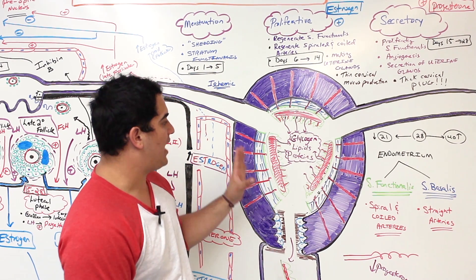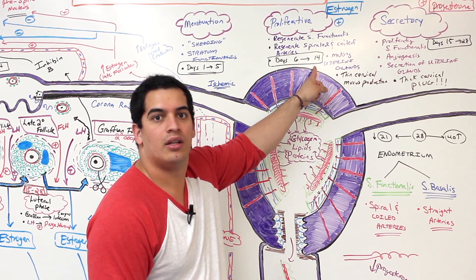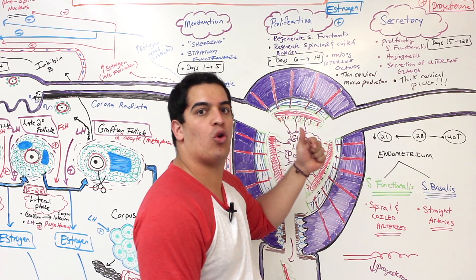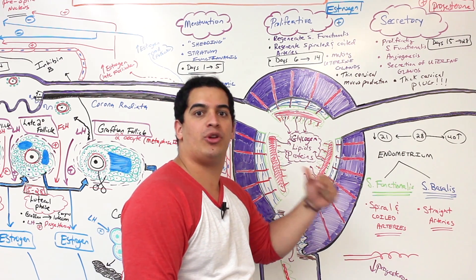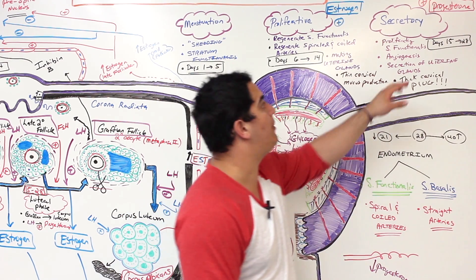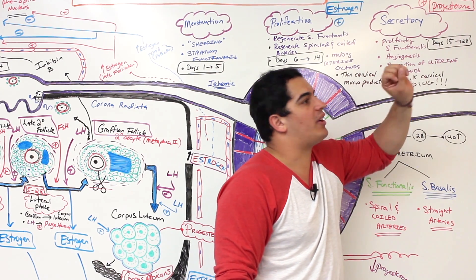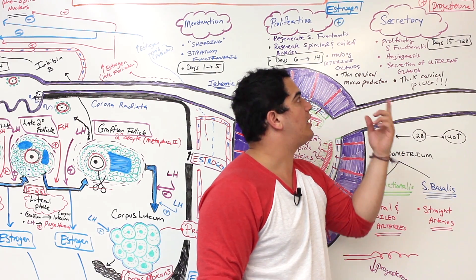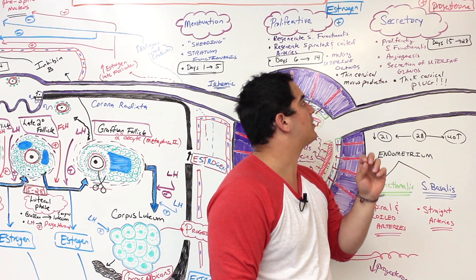As we get to the point of day 14, we reach ovulation. So ovulation occurs, and then what happens? Luteinizing hormone converts the ruptured graafian follicle into the corpus luteum and tells the corpus luteum to start producing what hormone? Primarily progesterone. I didn't mention this before, but there's tiny amounts of FSH that's also released, and that can stimulate the corpus luteum to make a little bit of estrogen, but very, very small amounts—primarily progesterone.